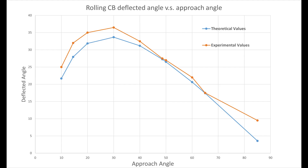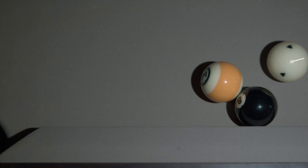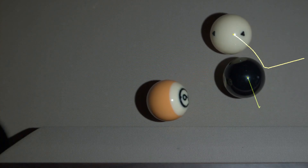As we can see in the scatter plot of deflected angle versus approach angle, the experimental values are systematically higher than the theoretical predictions. That's probably due to the fact that the theoretical values don't account for friction between the balls and the balls' inelasticity. I hope you liked the video — please leave a like below.